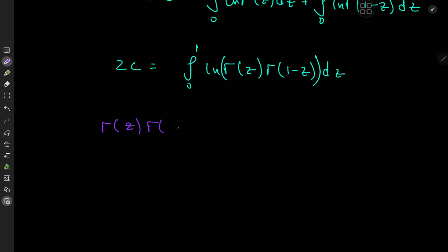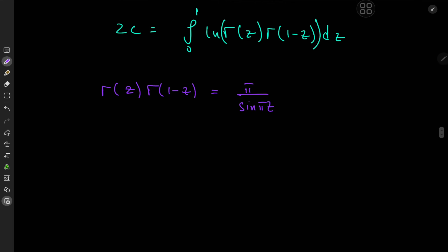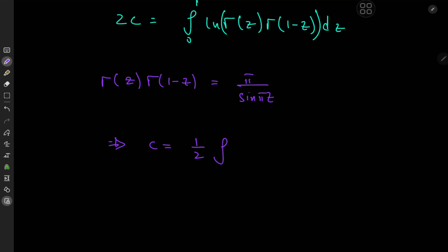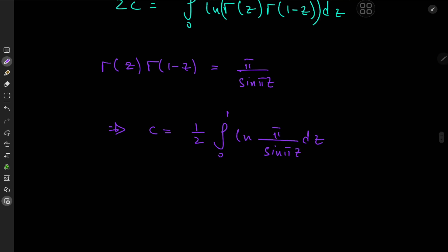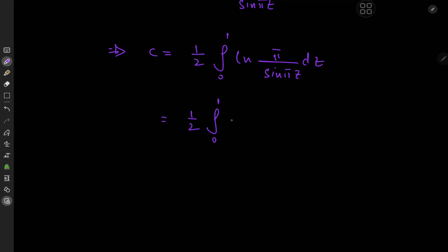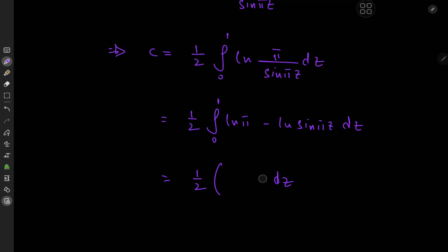We can now invoke Euler's reflection formula: gamma(z)·gamma(1−z) = π/sin(πz). So C = (1/2) times the integral from 0 to 1 of log[π/sin(πz)] dz. By linearity this splits into (1/2) times the integral of log π dz minus the integral from 0 to 1 of log sin(πz) dz. The log π term integrates over an interval of length one, leaving just (1/2)[log π − integral from 0 to 1 of log sin(πz) dz].